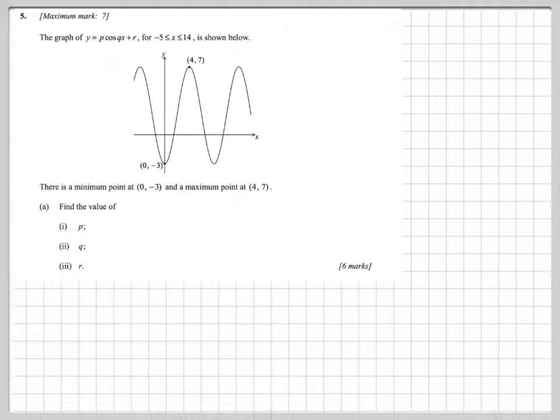It's possible to do this without a graphics calculator, even though this is a paper 2 type question. What you really need to do is work this in reverse. First find r, then find q, and then find p.